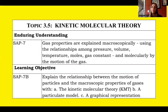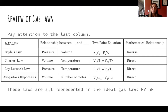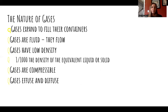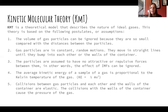We went through the gas laws to explain what's happening on a macroscopic level; now we look at the molecular level. We know that gases expand to fill their containers, they're fluid and flow, they have very low density — about one one-thousandth the density of the equivalent liquid or solid — they're compressible, they effuse, and they diffuse. The kinetic molecular theory is a model that describes an ideal gas based on five postulates.